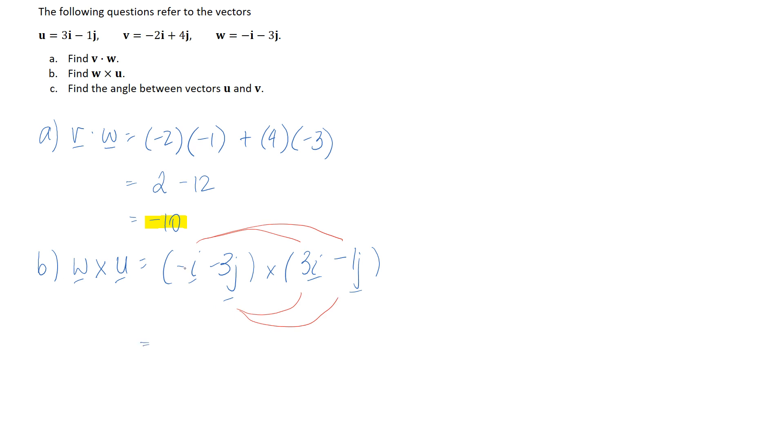So we'll start off here we've got negative i crossed with three i. Now we know that a unit vector crossed by itself is going to go to zero so that one's really easy to deal with.